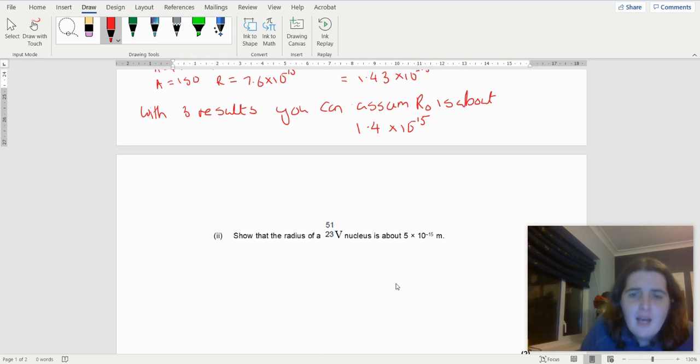So we've got here, show that the radius of a vanadium nucleus, I'm not a chemist, I do apologize, is about 5 × 10⁻¹⁵. So I've got R equals R₀A to the third.